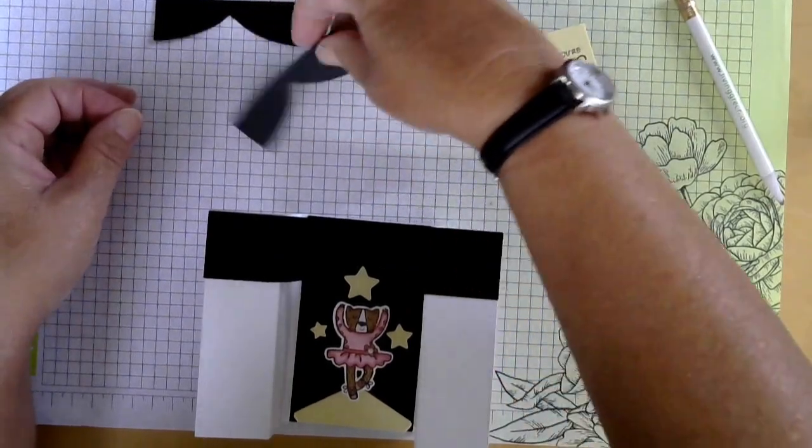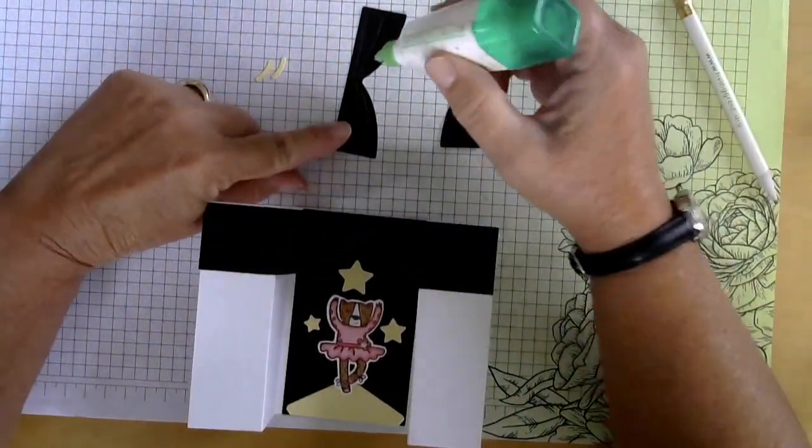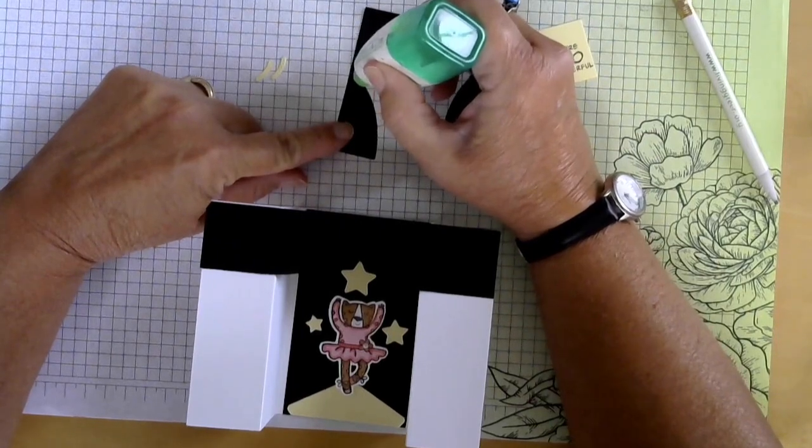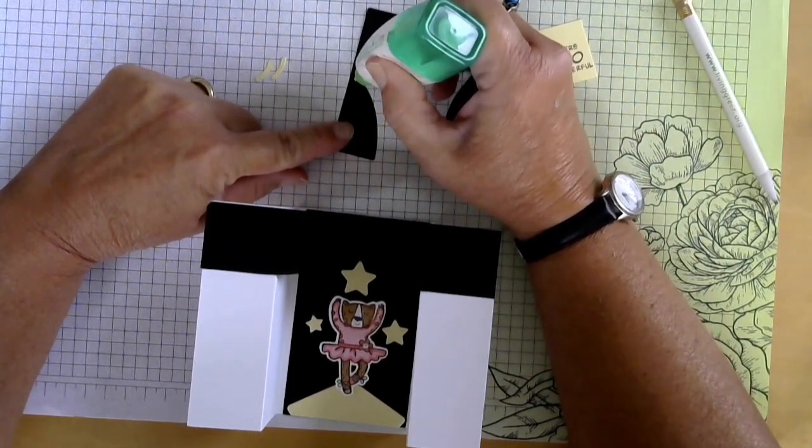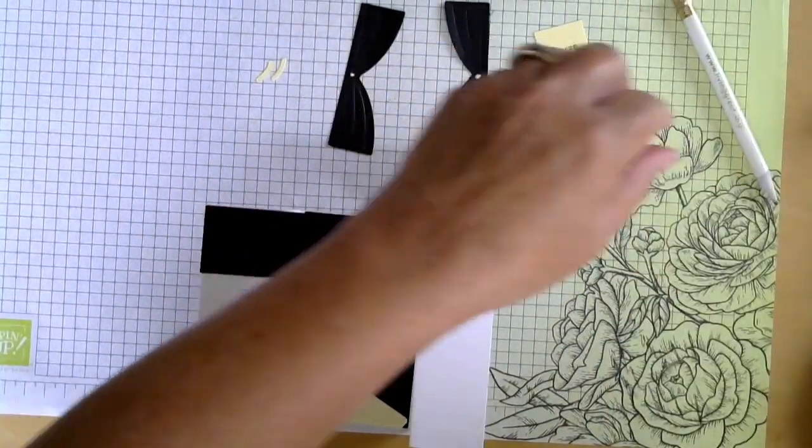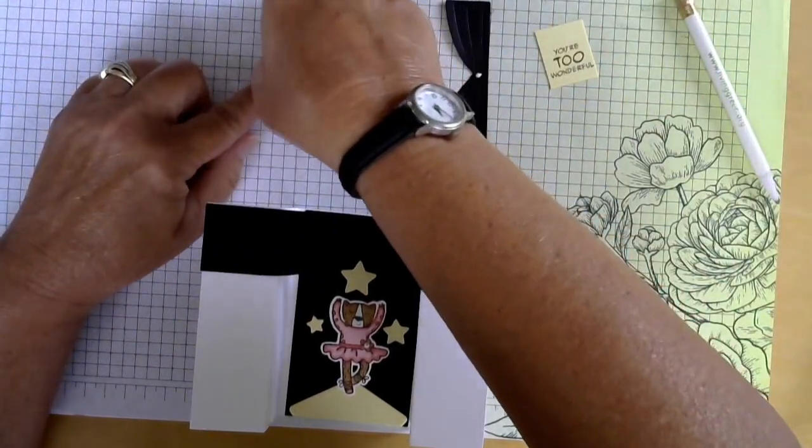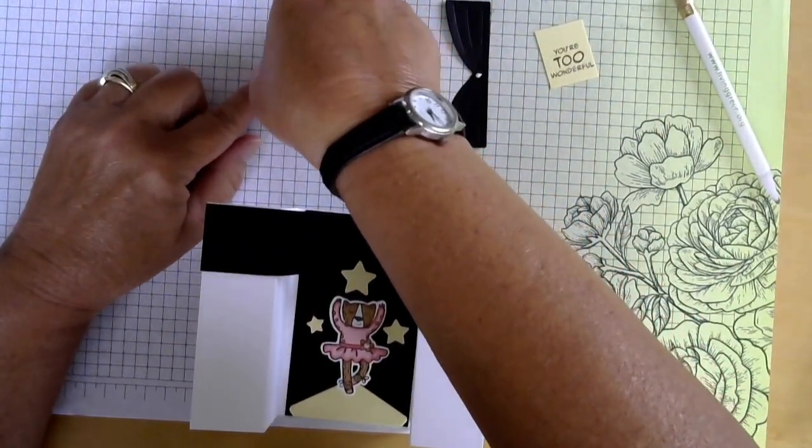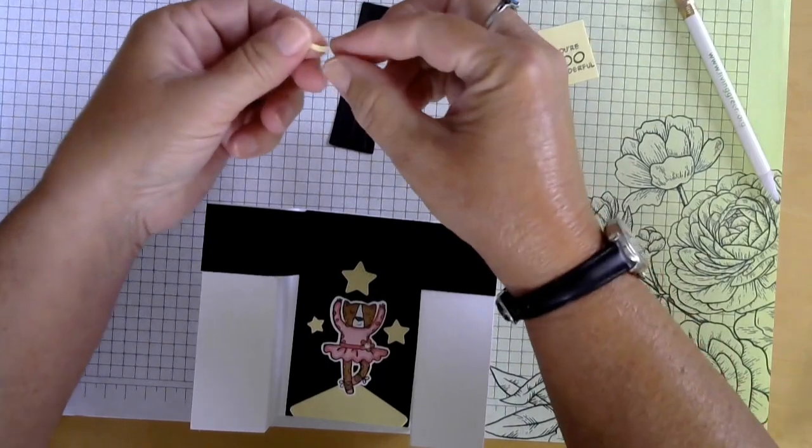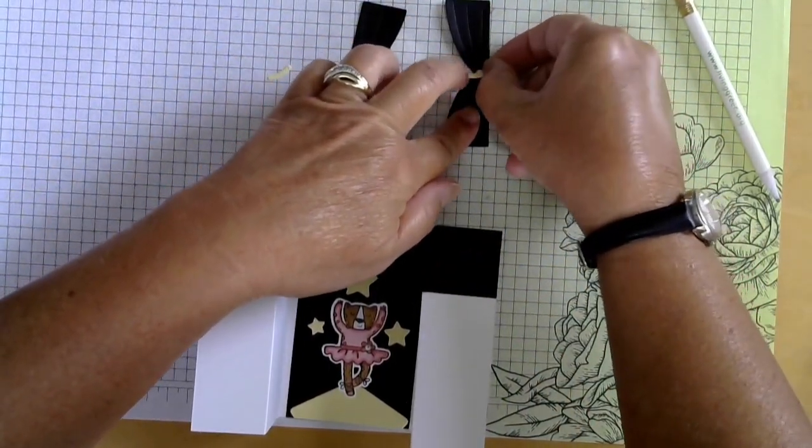Now let's put our tie backs on our curtains. And we'll just add a drop of glue on the curtains. Then place our tie backs onto the glue.